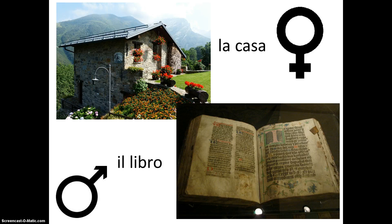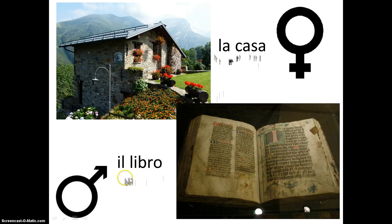Last week we saw that Italian nouns have gender and as such are either masculine or feminine. In this example we have la casa — a feminine article and a feminine noun — and il libro, a masculine article introducing a masculine noun. We learned that the article indicated gender and had to agree with the noun.